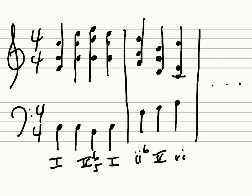Here we have a progression where at the end, instead of five going to one, five goes to six. I'm going to follow this with a bunch of chords that go to an authentic cadence the way we expected the first time. And that was all one phrase, with the authentic cadence at the very end. We would call that a deceptive resolution, since that's not actually a cadence — it's the middle of the phrase.